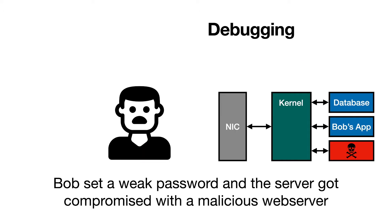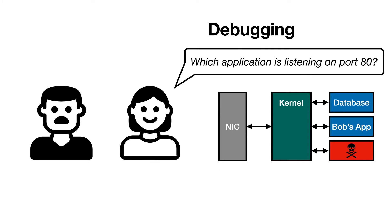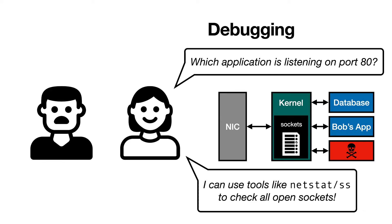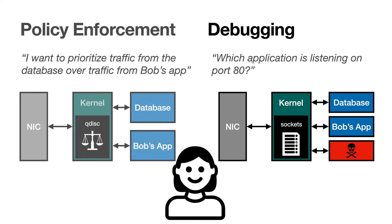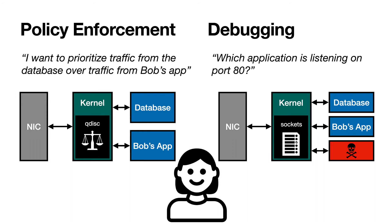Writing a very inefficient application wasn't the only mistake that Bob made. He also set a weak password, and that allowed the server to be compromised with a malicious web server. Again, Alice knows what she has to do — she only needs to find which application is listening on port 80. For that, she can rely on the kernel's knowledge of all the open sockets in the system and use tools like netstat or SS to identify which process is listening on port 80. These are only two examples of the many policies and debugging capabilities made possible by the kernel's ability to oversee all traffic.